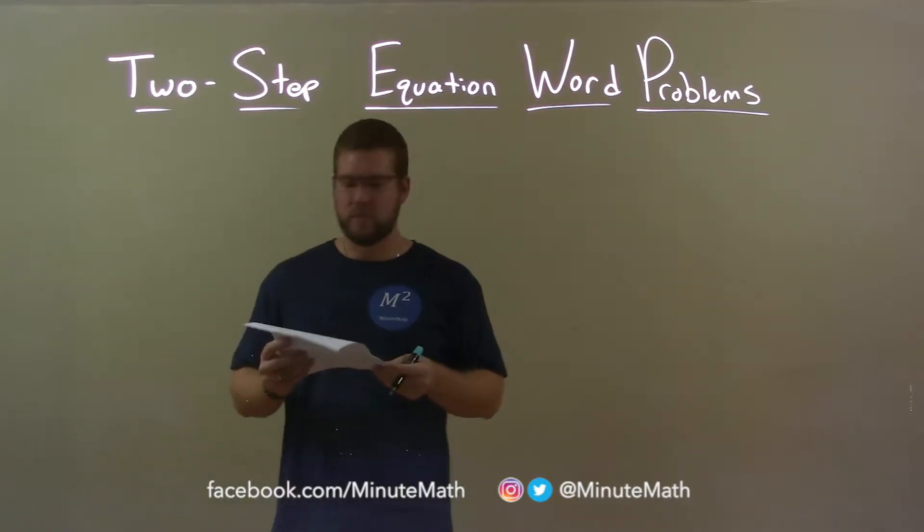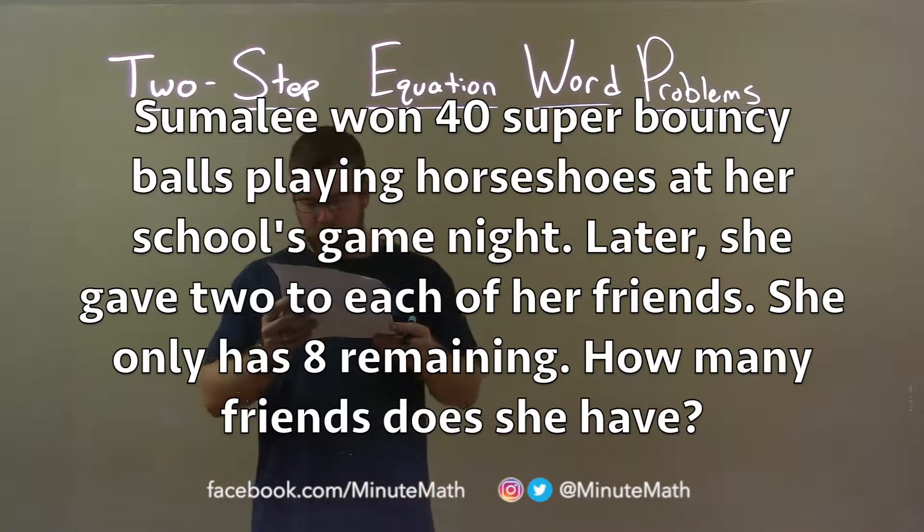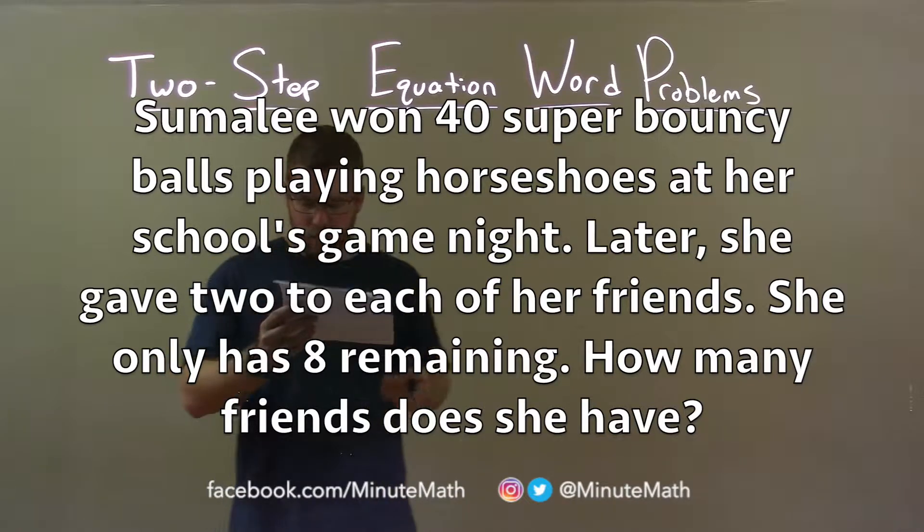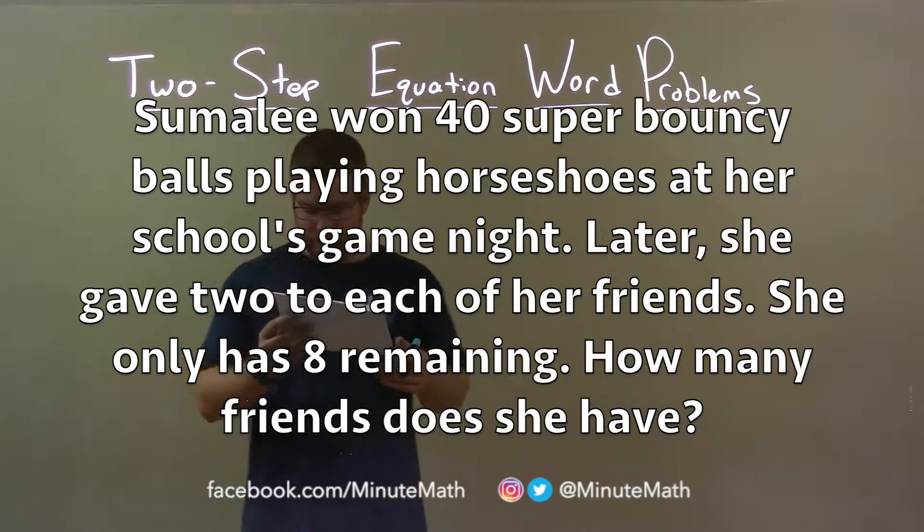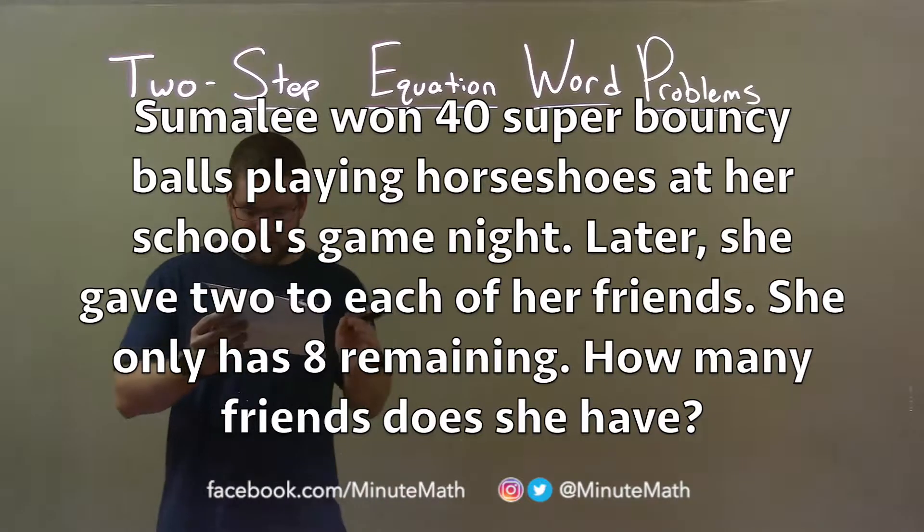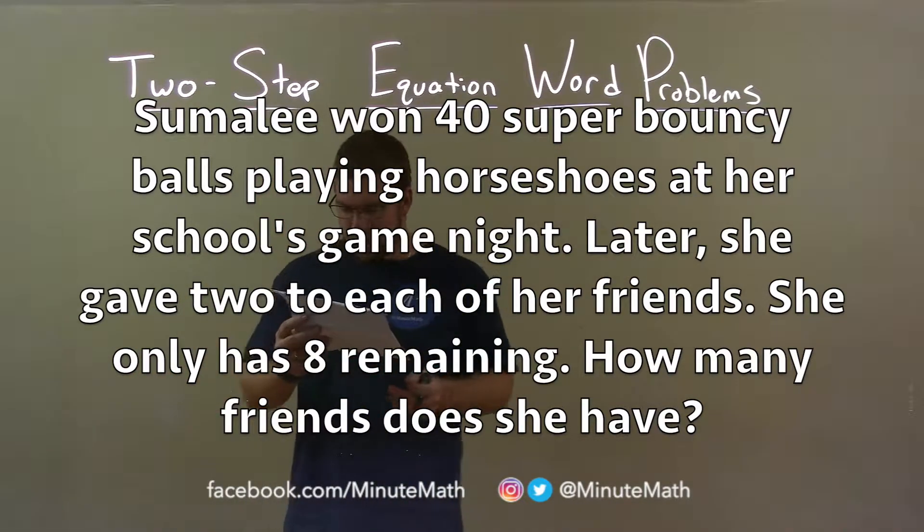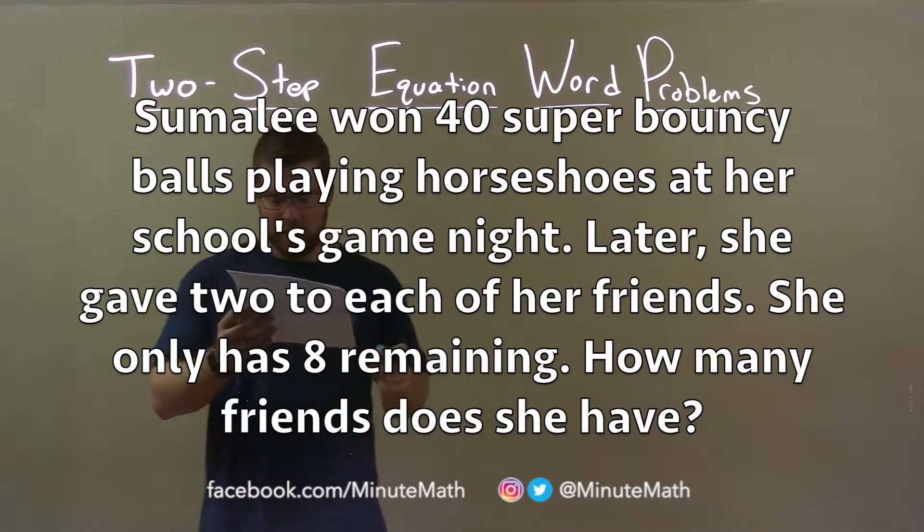If I was given this word problem: Sumalee won 40 super bouncy balls playing horseshoes at her school's game night. Later, she gave two to each of her friends. She only has eight remaining. How many friends does she have?